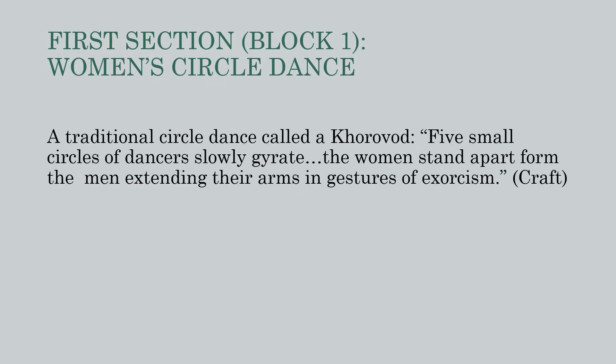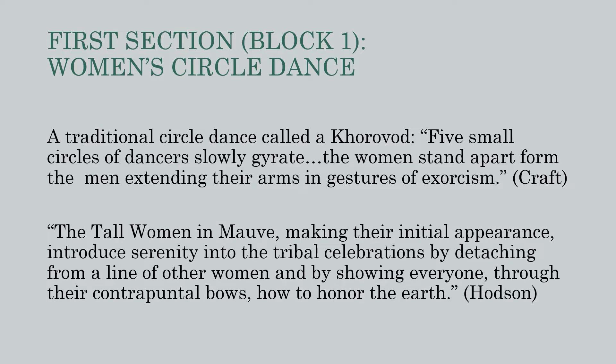According to Kraft, the opening of Spring Rounds is a traditional circle dance, a choravode, in which five small circles of dancers slowly gyrate. The women stand apart from the men, extending their arms in gestures of exorcism. In the Hodgson-Naginski choreography, the tall women in mauve, making their initial appearance, introduce serenity into the tribal celebrations by detaching from a line of other women and showing everyone, through their contrapuntal bows, how to honor the earth.